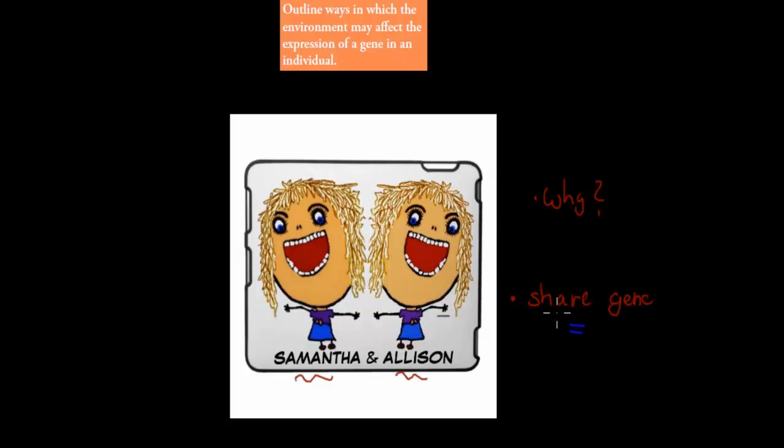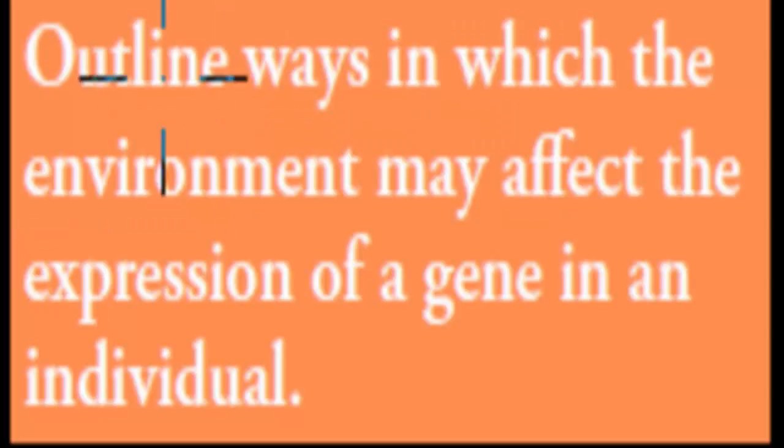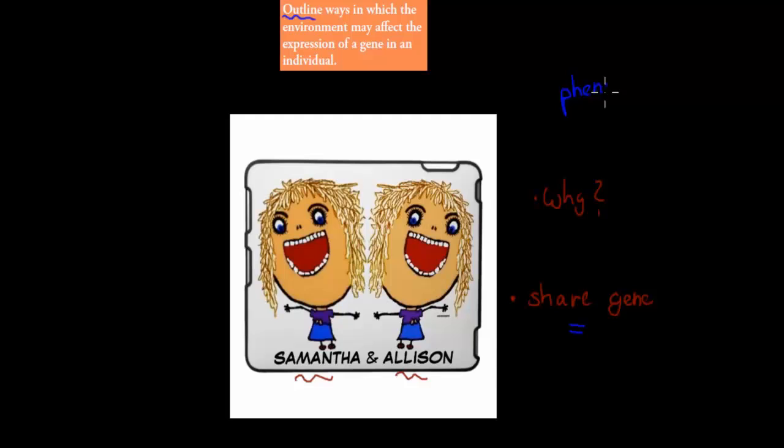We're going to talk about what actually can also influence behavior or appearance apart from the genes. I'll read the actual point. It says, the genes outline ways in which the environment may affect the expression of a gene in an individual. So what we have to talk about is what the environment can do to the phenotype, and what the phenotype is is the appearance,